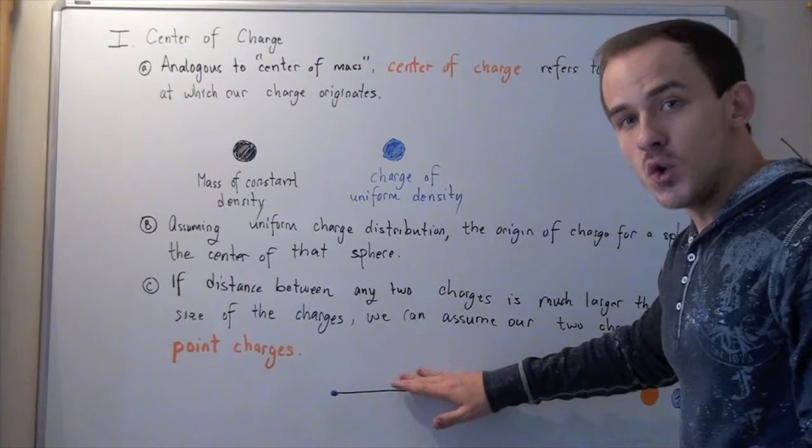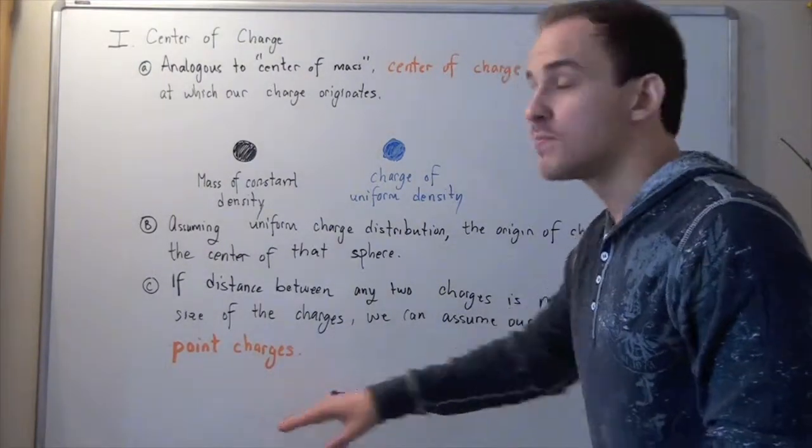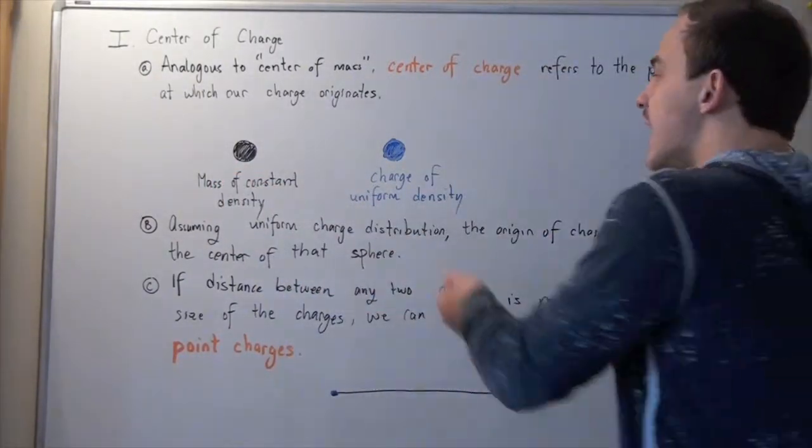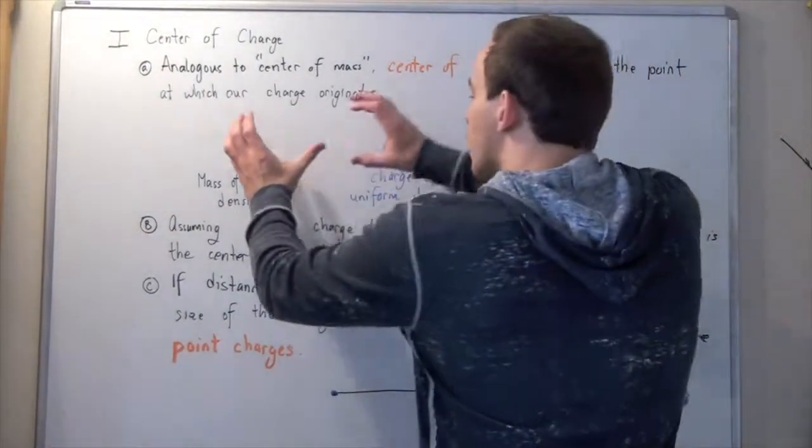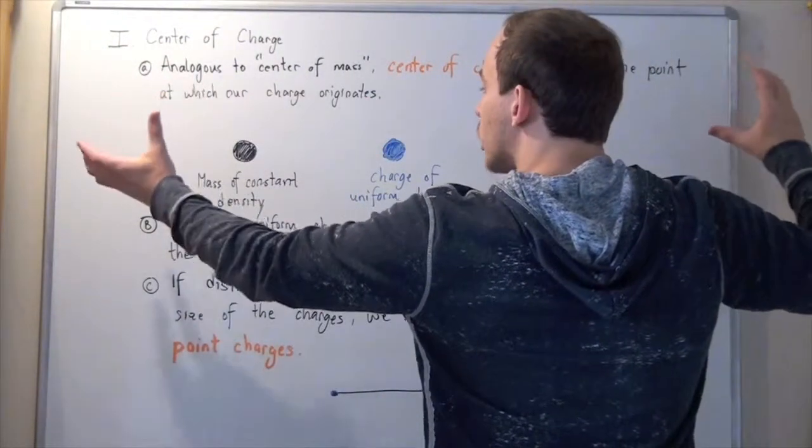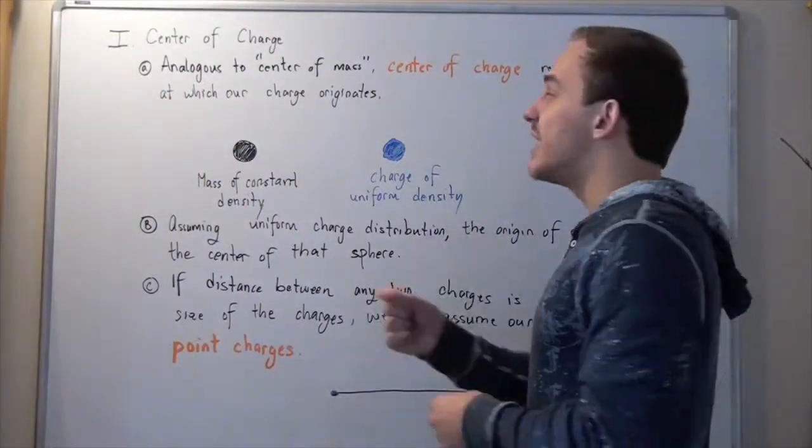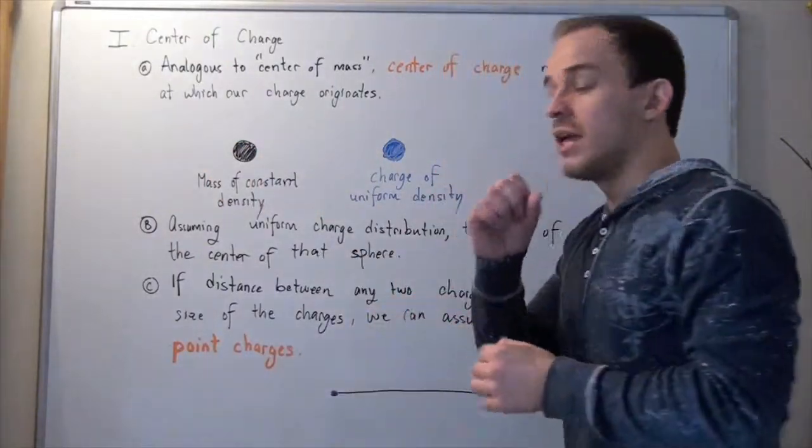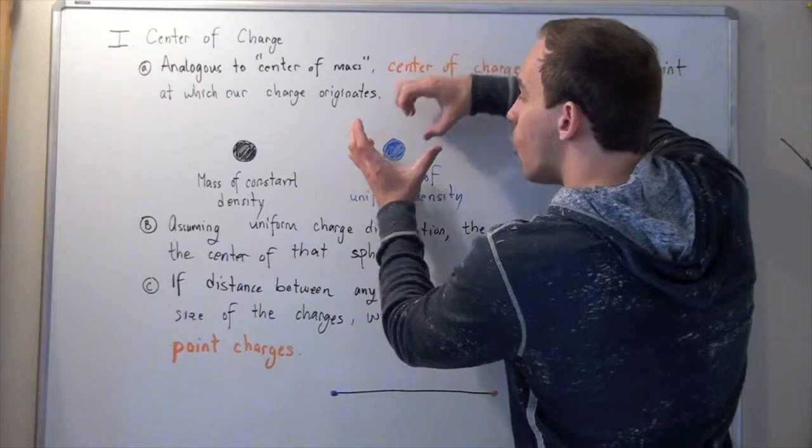In other words, if this was a charge of some charge q1, and this was a second charge with some charge q2, and they were relatively far apart, the distance between them was much larger than the radius of any two spheres, that means we can approximate these to be point charges.